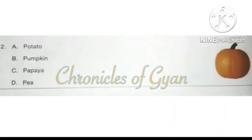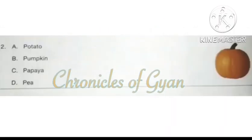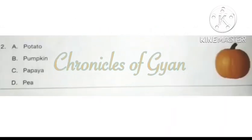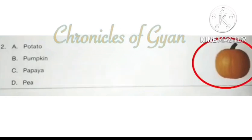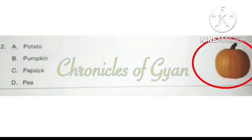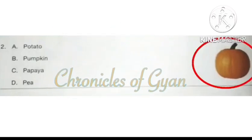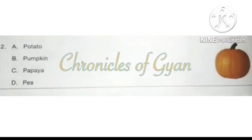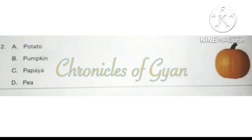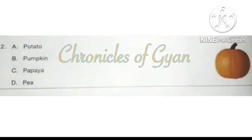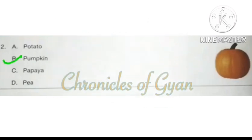Question 2. Whose picture is this? This is a pumpkin. A pumpkin is a fruit but we use it as a vegetable. The correct answer is option B: Pumpkin.